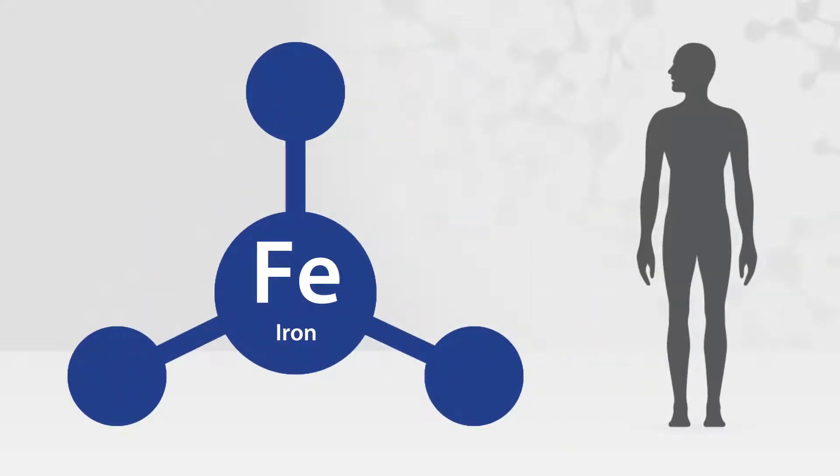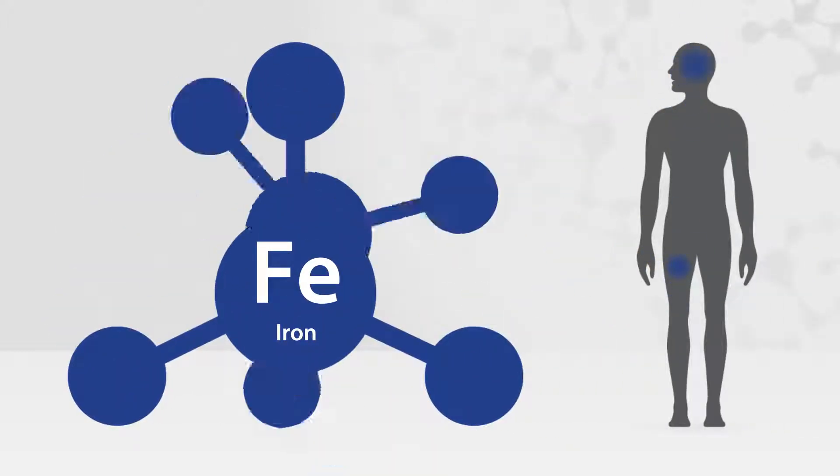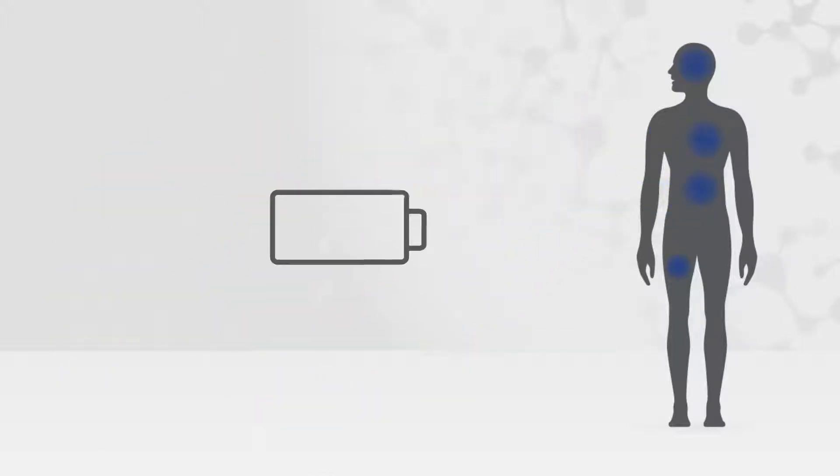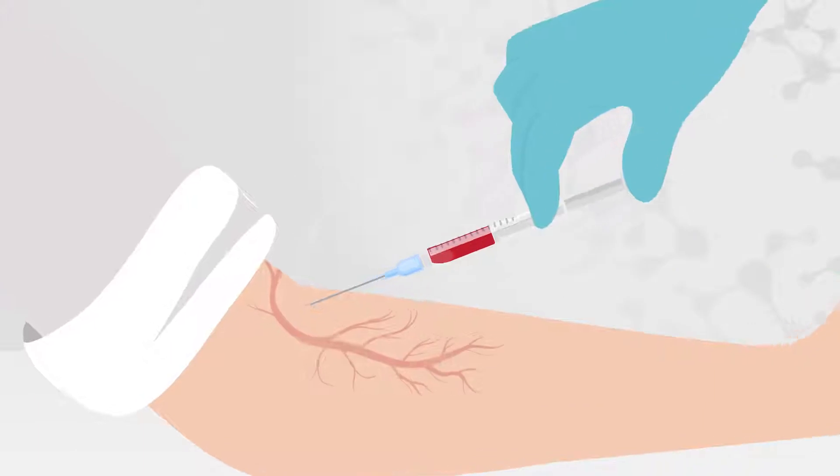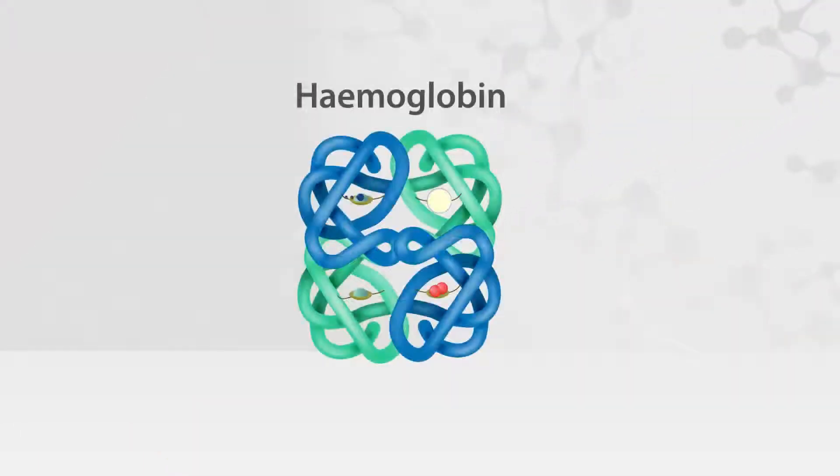Iron is involved in a number of jobs in the body and is arguably one of the most important minerals, particularly for maintaining energy levels. Iron forms a component of hemoglobin, the protein in red blood cells that carries and delivers oxygen to every cell in the body.